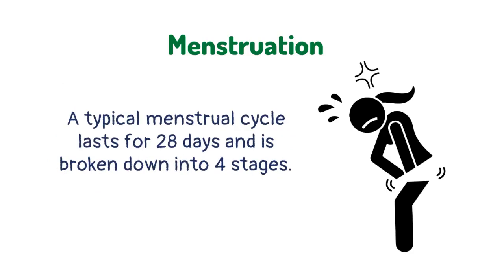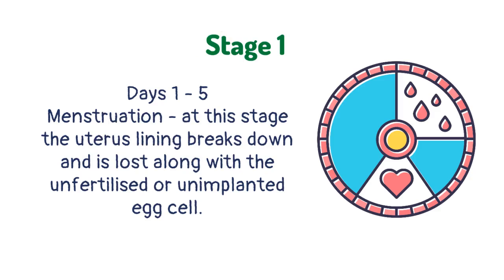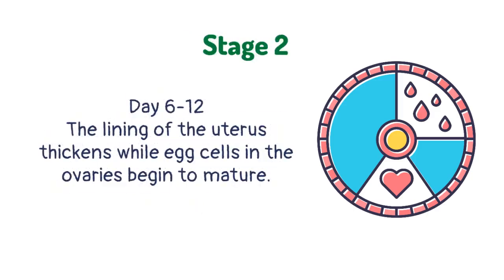A typical menstrual cycle lasts for 28 days and is broken down into four stages. During days 1 to 5, menstruation occurs — the uterus lining breaks down and is lost along with the unfertilized or unimplanted egg cell. During days 6 to 12, the lining of the uterus thickens while egg cells in the ovaries begin to mature.